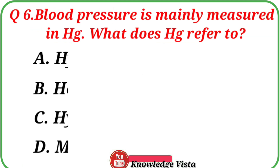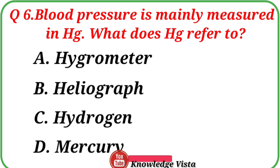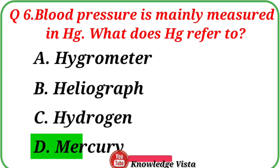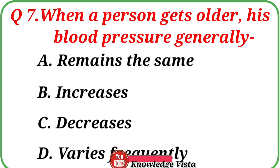Question number 6: Blood pressure is mainly measured in Hg. What does Hg refer to? Option A: Hygrometer. Option B: Heliograph. Option C: Hydrogen. Option D: Mercury. The correct answer is option D, Mercury. Hg is the symbol of mercury. It is used in thermometers, barometers, etc.